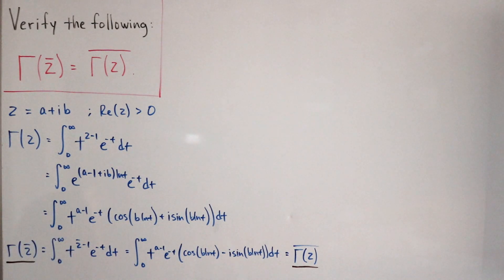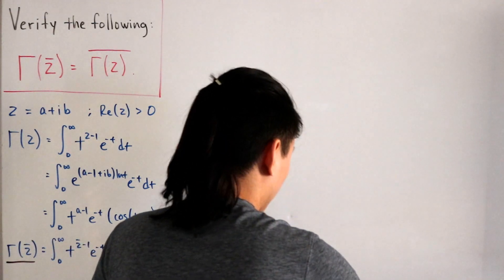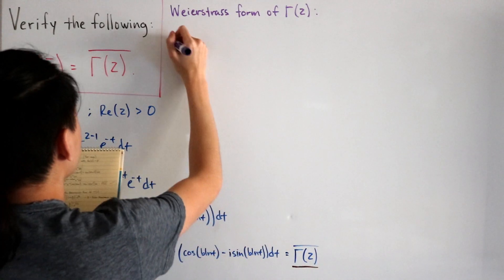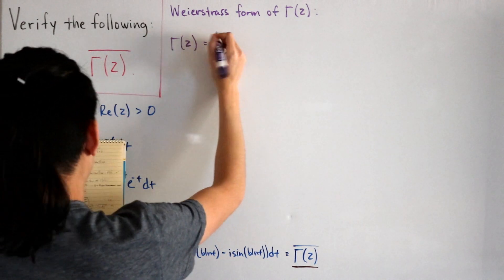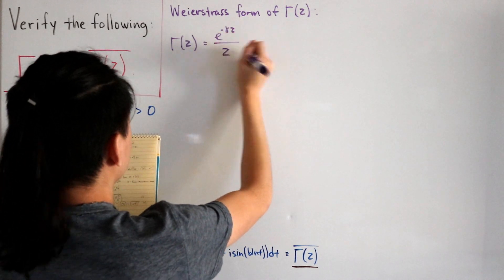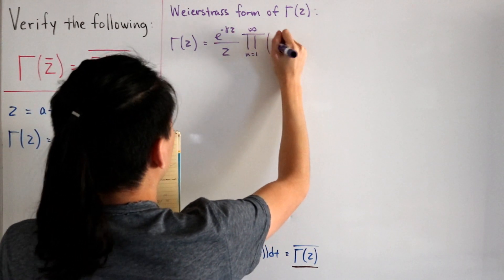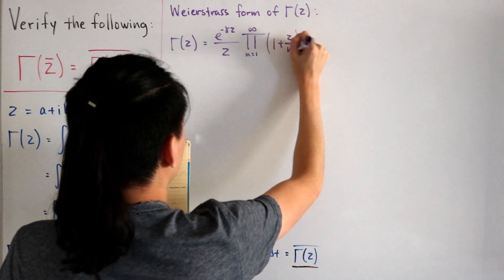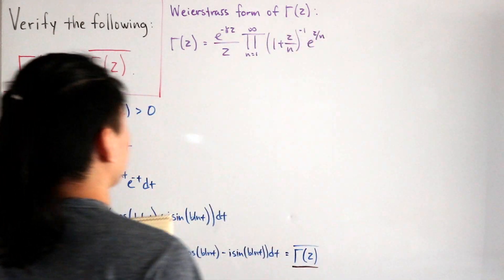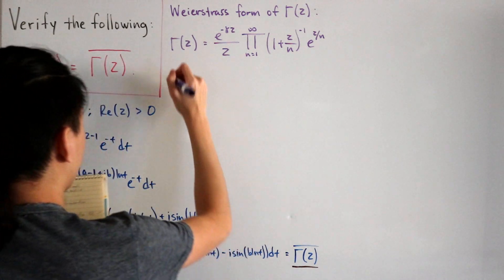Now let's do the second method using the Weierstrass form of the gamma function. The Weierstrass form of gamma(z) is written as follows: gamma(z) equals e to the negative lowercase gamma divided by z, multiplied by the infinite product over n from 1 to infinity of (1 plus z over n) inverse times e to the power z over n, where lowercase gamma is the Euler-Mascheroni constant.